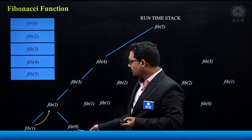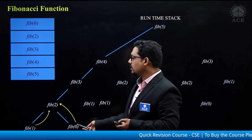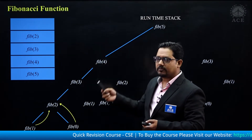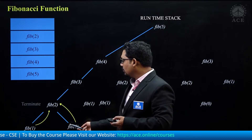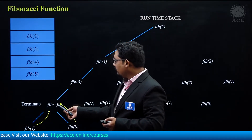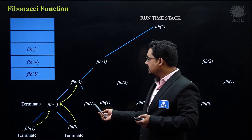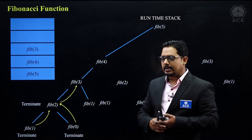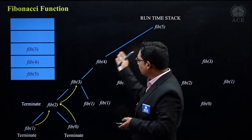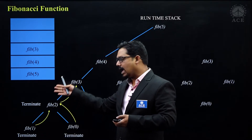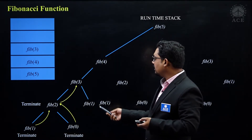Then the next activation record starts with Fib0, which is pushed, and when it terminates it comes back to Fib2 because Fib1 and Fib0 have now been calculated. Once Fib1 and Fib0 are calculated, the Fib0 activation record is taken out, Fib2 adds the values of Fib1 and Fib0, and Fib2 terminates. Control returns to Fib3. Fib2 is calculated; now it goes for the second call. Two terminated, then it goes for Fib1.